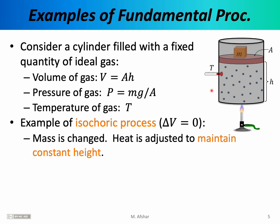An example of an isochoric process — one in which the volume does not change — is one where we, for example, stack more masses on the piston, increasing the downward force, while at the same time turning up the Bunsen burner, heating the gas. As we do this, the gas molecules will begin to move faster, their pressure increases, they exert a greater upward force on the piston, and if that force balances the weight of the mass, then the height of the piston remains constant. So that's an example of an isochoric process: the height remained constant, and therefore the volume remained constant, but the pressure and the temperature were changed.